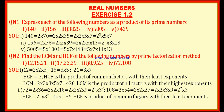For the HCF, we take the least exponents. For 2: out of 2³ and 2², the least exponent is 2, so we write 2². For 3: out of 3² and 3³, the least exponent is 2, so we write 3². Therefore HCF = 2² × 3² = 4 × 9 = 36. The HCF of 72 and 108 is 36.